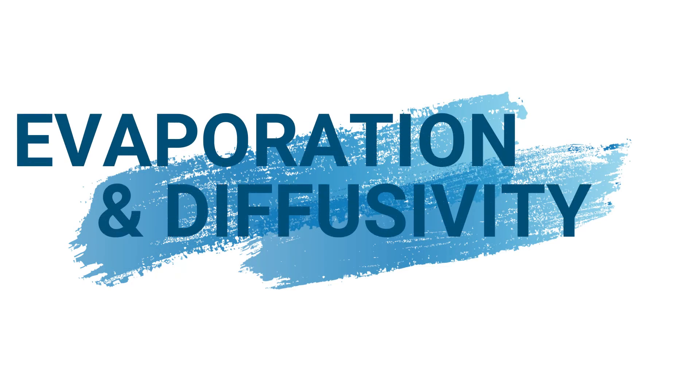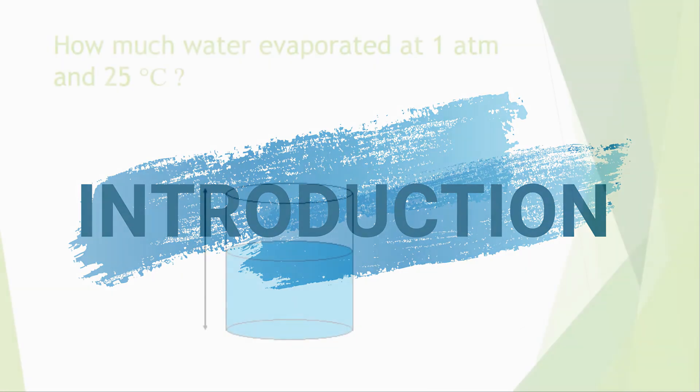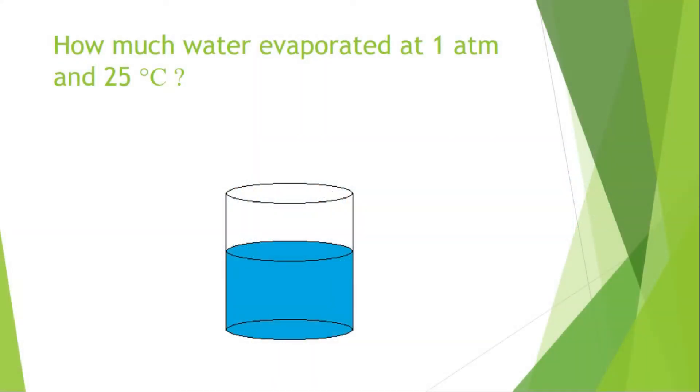Hello everyone, today we will learn about evaporation and diffusivity by solving an example. Consider a tank open to atmosphere, approximately 70% filled with liquid water. This is the total height of the tank, height of the liquid water, and height of the stagnant layer of air above the liquid.